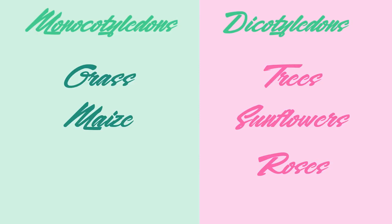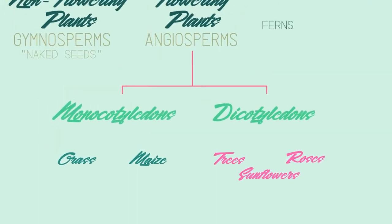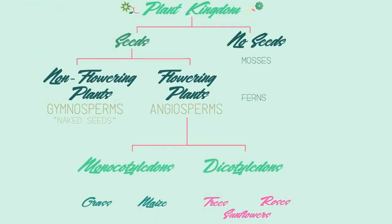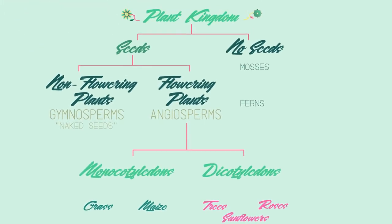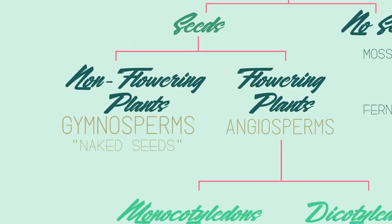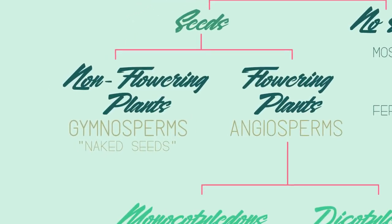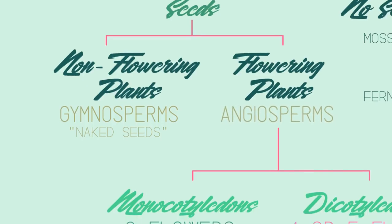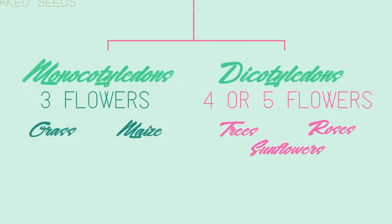So there we have some of the ways plants are classified. Remember that non-flowering plants are called gymnosperms and have naked seeds, and that flowering plants are called angiosperms, which can be separated into monocots and dicots.